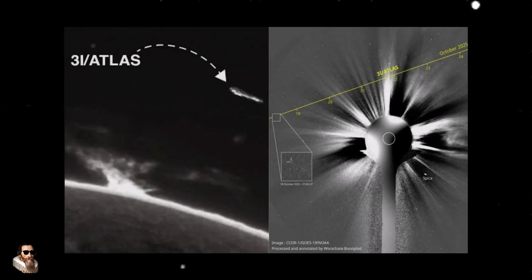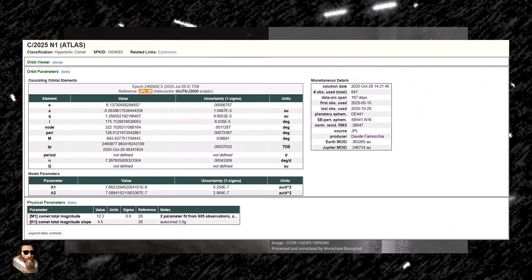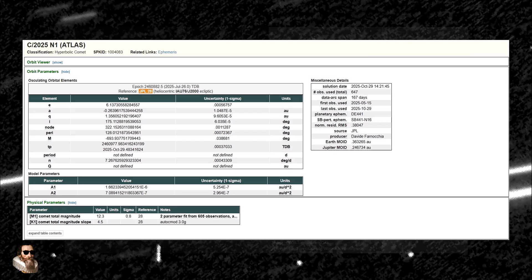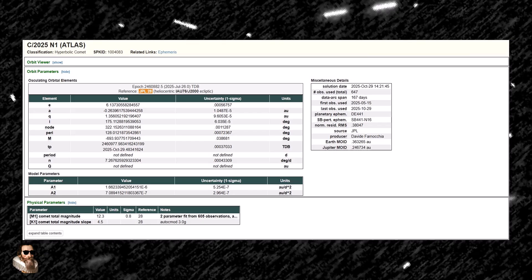The published analysis by the JPL shows measurable accelerations that diverge from those expected under gravity alone, solar gravity alone. 3I Atlas did not simply follow the Sun's pull at perihelion, it seemed to push itself away and slightly sideways.